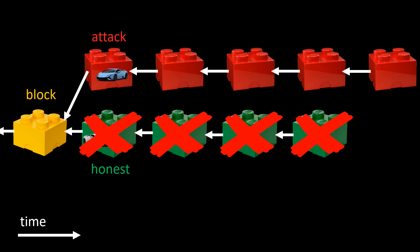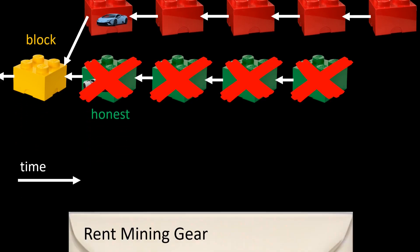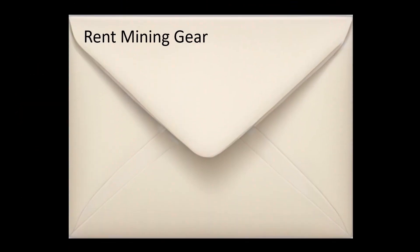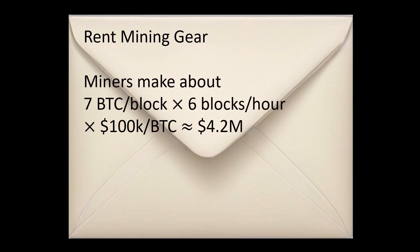How much does such an attack cost? Let's do a quick back of the envelope calculation. The idea of the attacker is to rent some mining gear for a short amount of time. At the time of making this video, a miner receives about 7 bitcoins per block, and as said before, a new block is found about every 10 minutes, so we have about 6 blocks per hour.